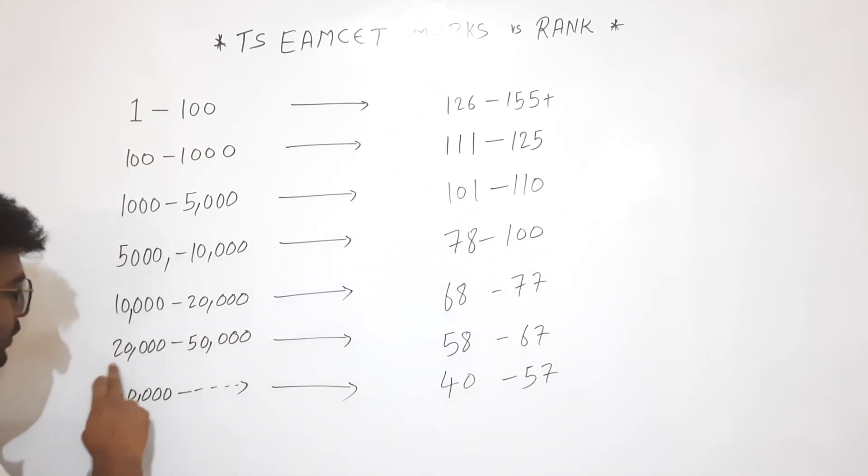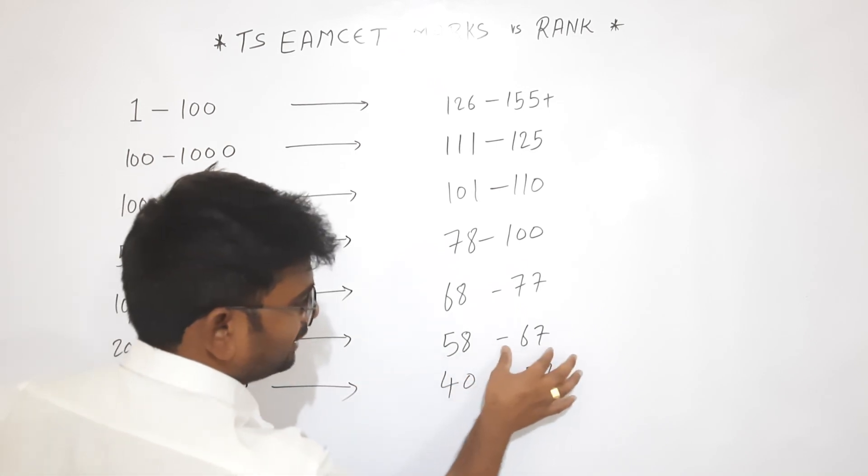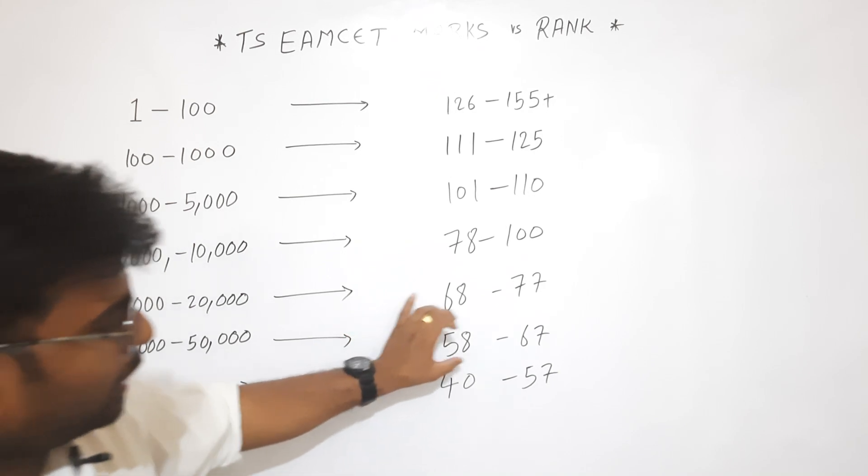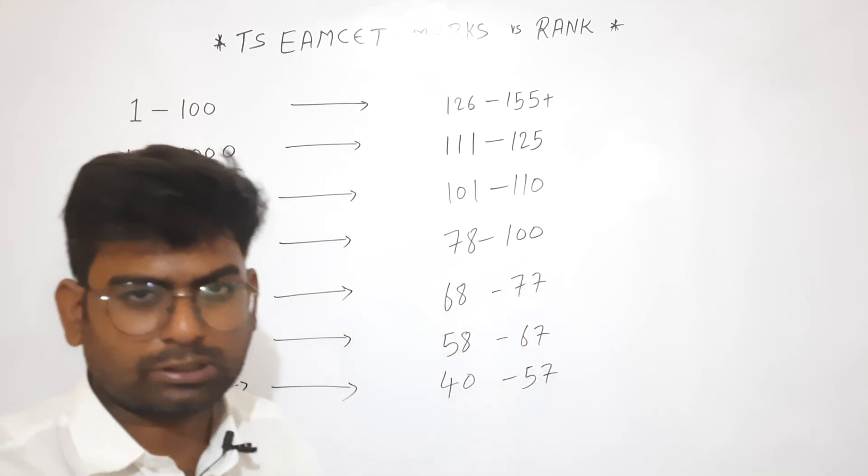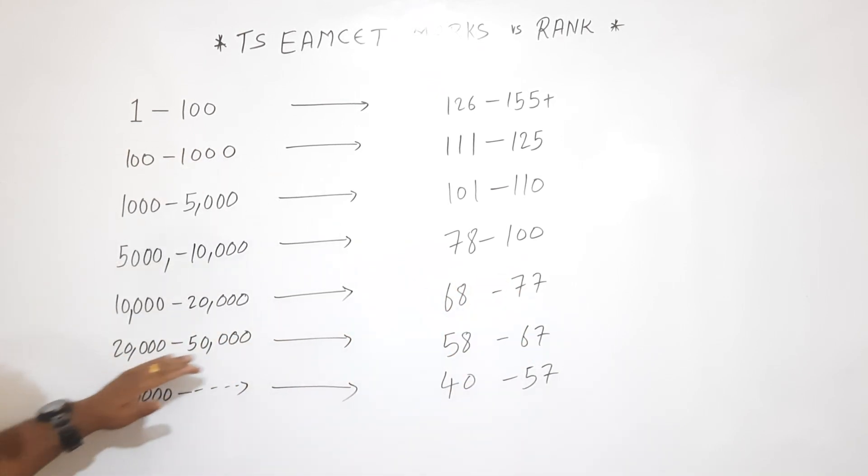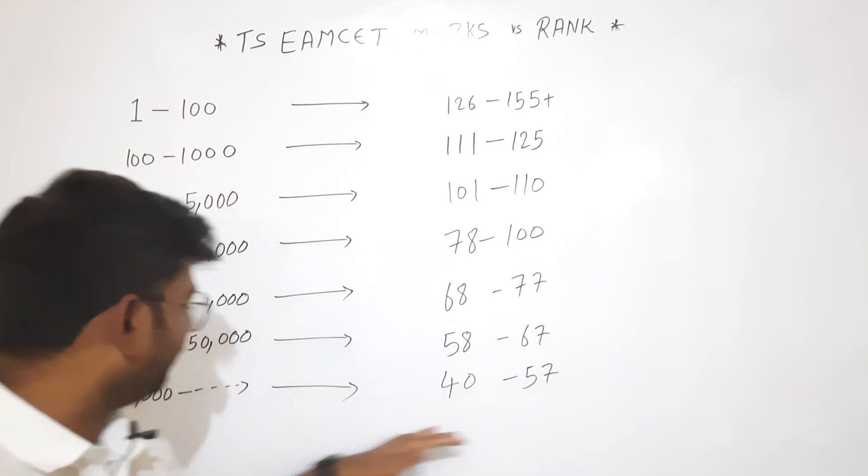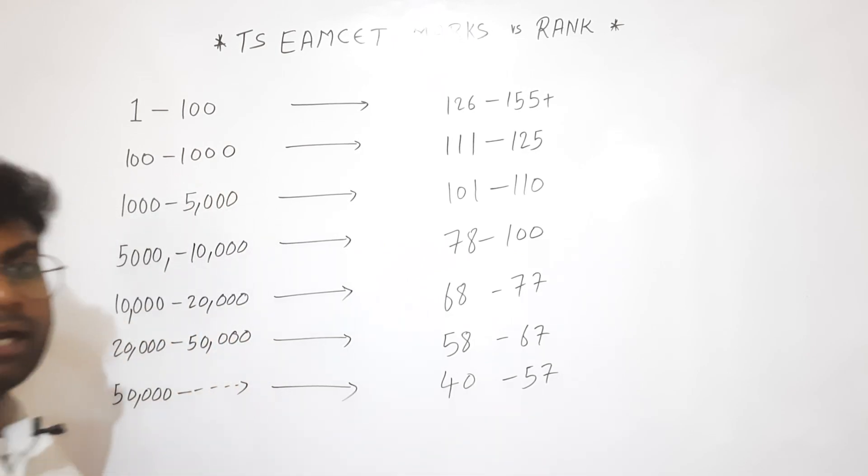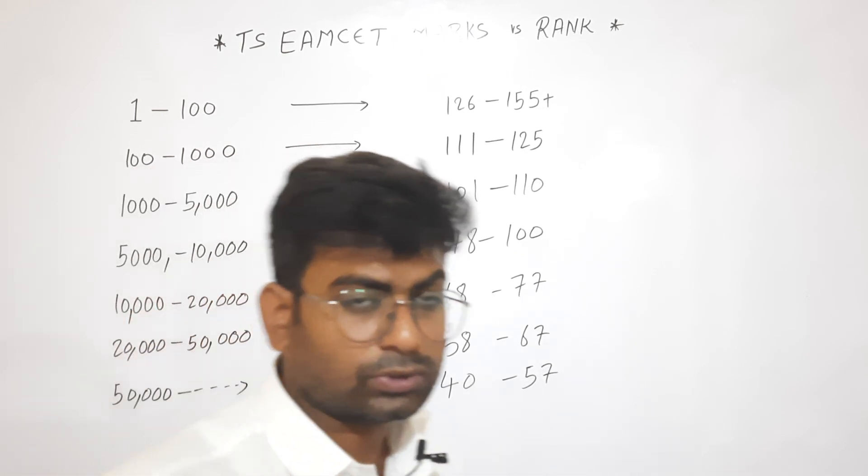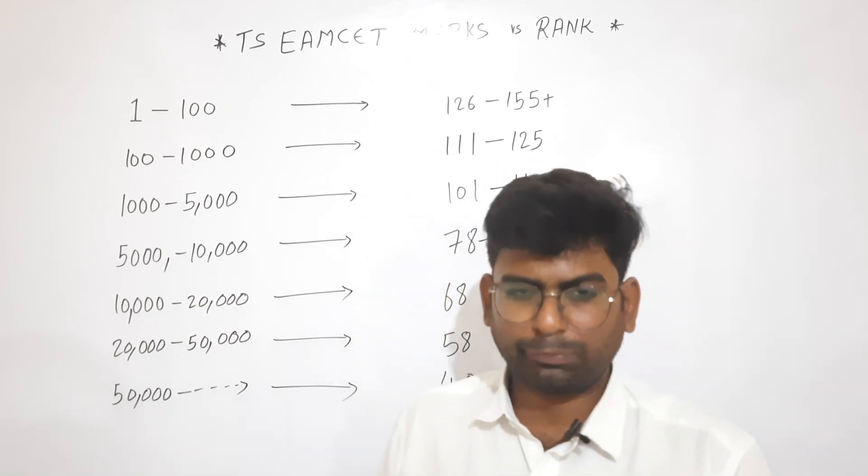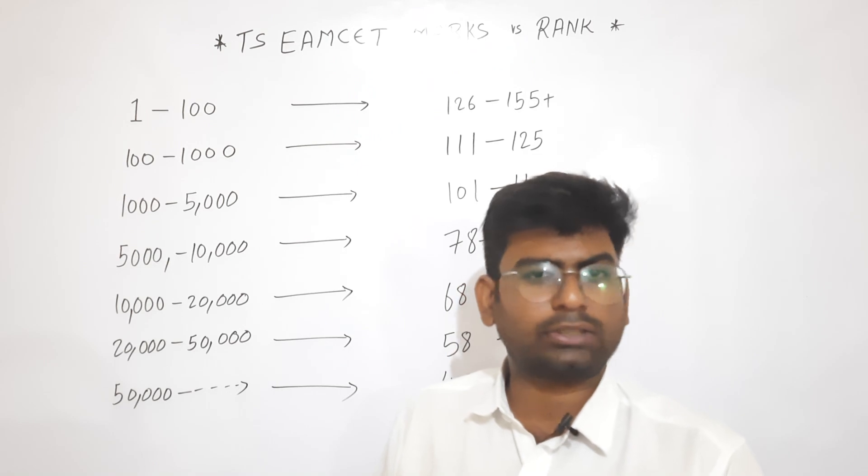For students 20,000 to 50,000 between rank, 58 to 67 marks. 58 to 67 marks gets you 20,000 to 50,000 between rank. And 40 to 57 marks between gets 50,000 to 1,00,000 rank. So target and fix marks to get your target rank. Focus on rank.